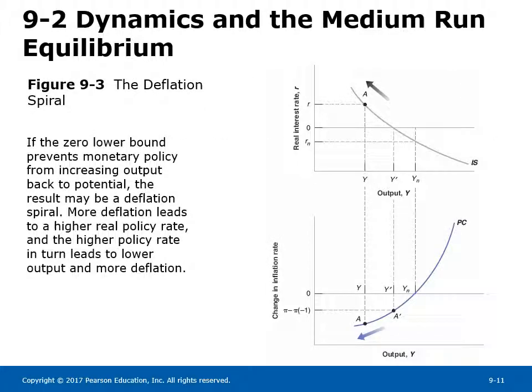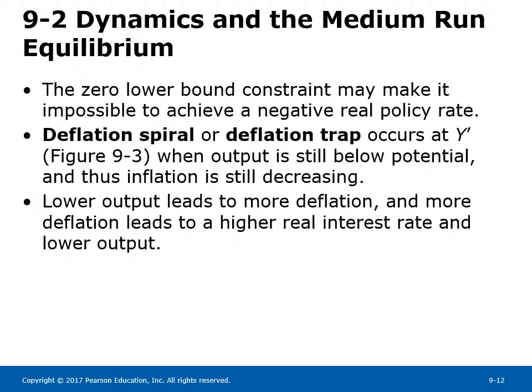Figure 9-3 shows the dangers of a deflation spiral. Suppose the economy is at point A in the short run at output level Y, which is below the potential level of output. The Phillips curve tells us that change in inflation will be negative. If the Fed lowers the nominal interest rate but the zero lower bound prevents the real rate from falling to the level needed to restore potential output, a deflationary spiral kicks in. Falling prices cause the real interest rate to rise and output to fall further, producing more deflation. The zero lower bound makes it impossible to achieve a negative real policy rate. At Y', output is still below potential, inflation is still decreasing, and lower output leads to more deflation, which leads to a higher real interest rate and lower output.